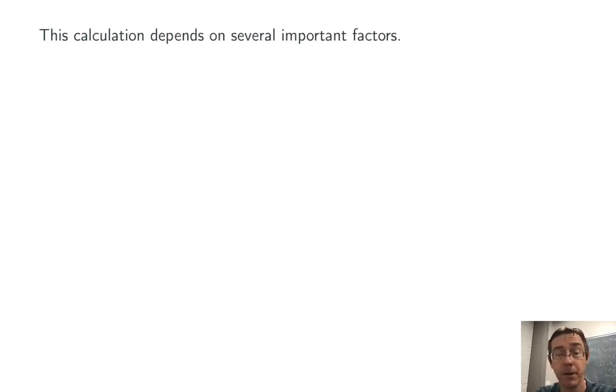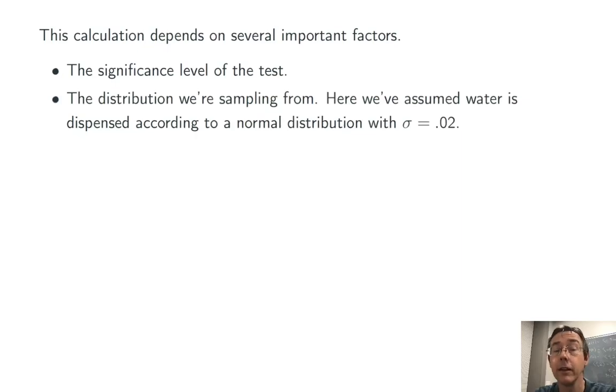Let's wrap up with an important observation and some follow-up questions that we're going to want to answer in the future. This calculation that we did depended on four really important factors. First of all, the significance level of the test. Secondly, the distribution that we're sampling from. In this case, it was normal with standard deviation that was known to be 0.02.